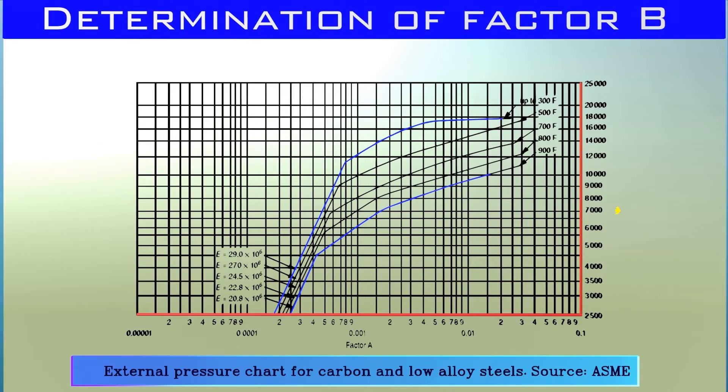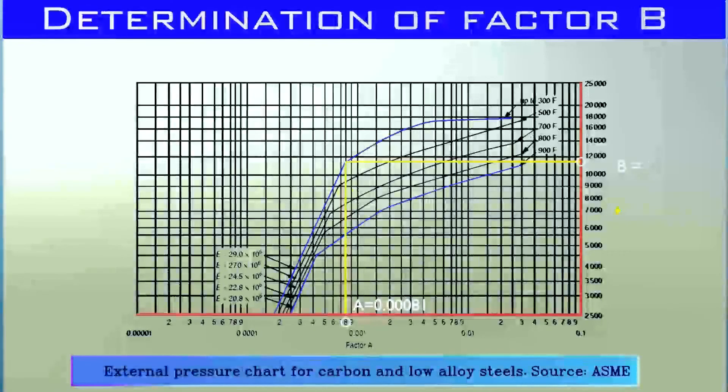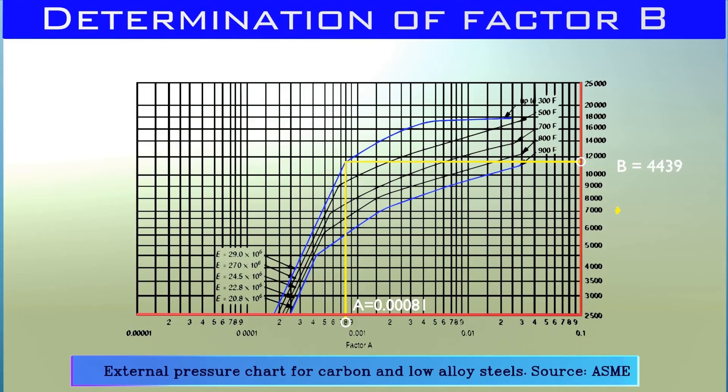We will spot the value of factor A on the x-axis, that is 0.0081 as previously determined. We will take the line up to the operating temperature curve of the vessel and relative strength of the materials, and then to the axis of factor B. This will spot the value of factor B, which is 11,800 respectively.